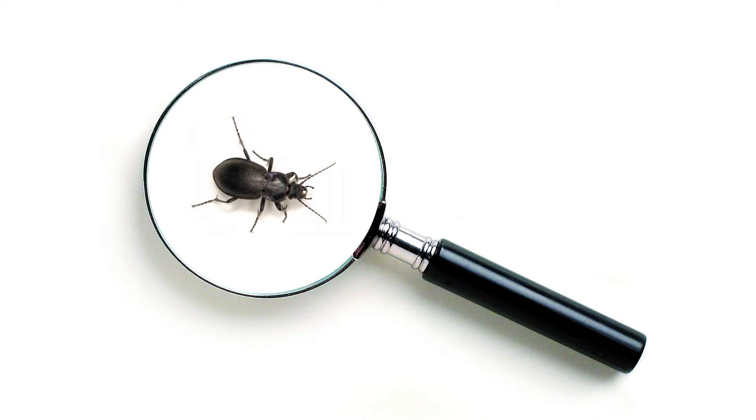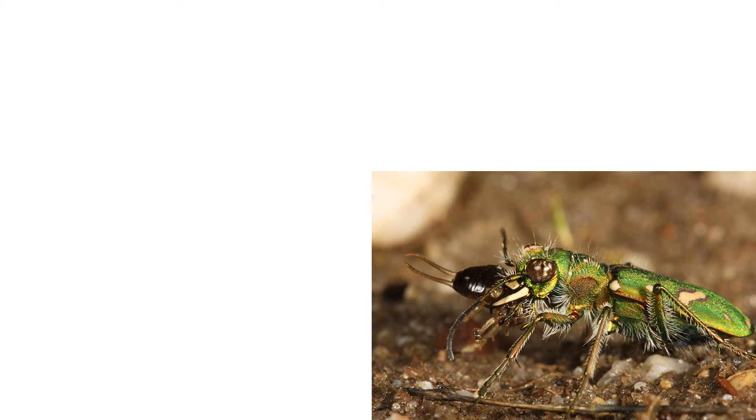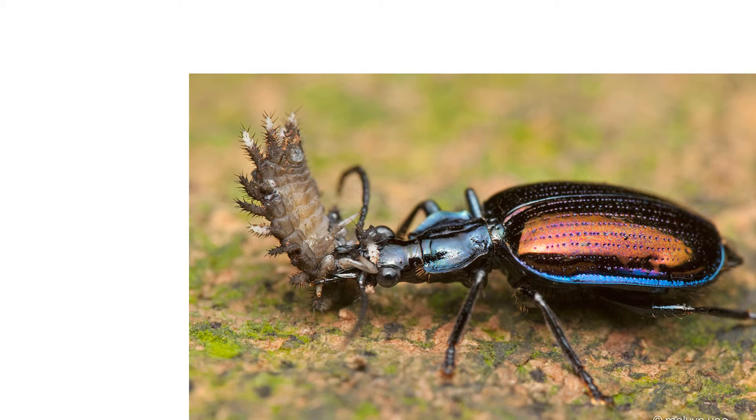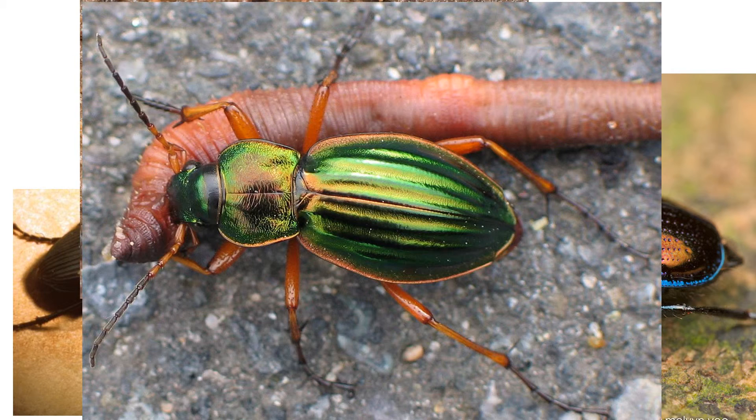But what if we are looking at it on the wrong scale? The majority of animal biomass in most terrestrial systems is from insects. Carabid beetles are top predators in the insect world and could have similar top-down cascading effects on other insects and plants.